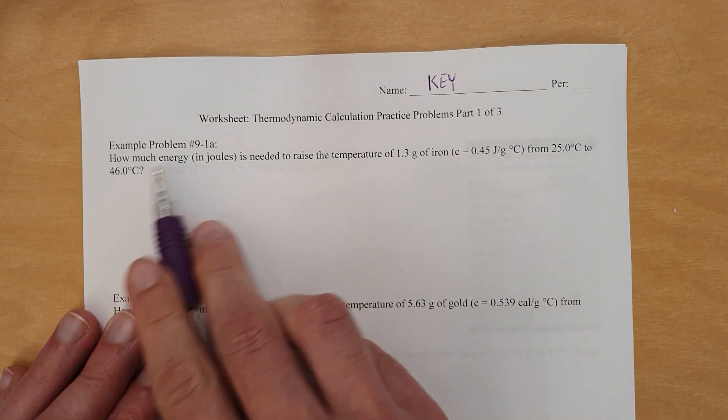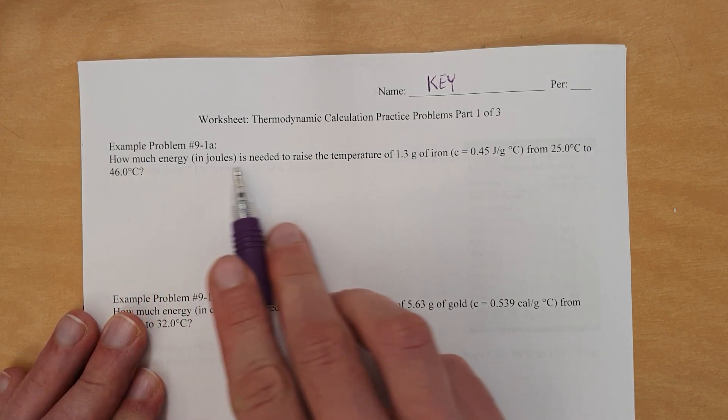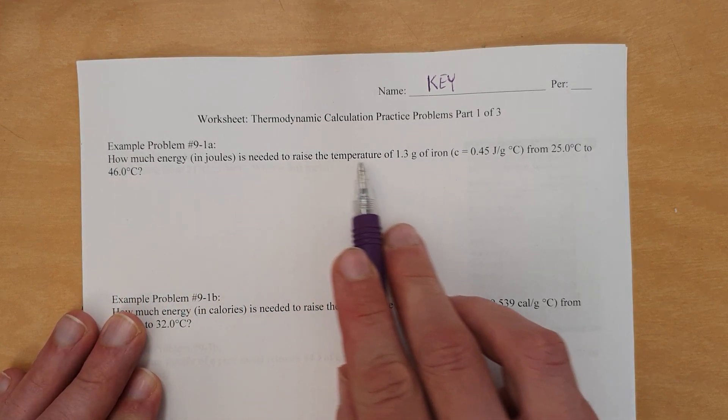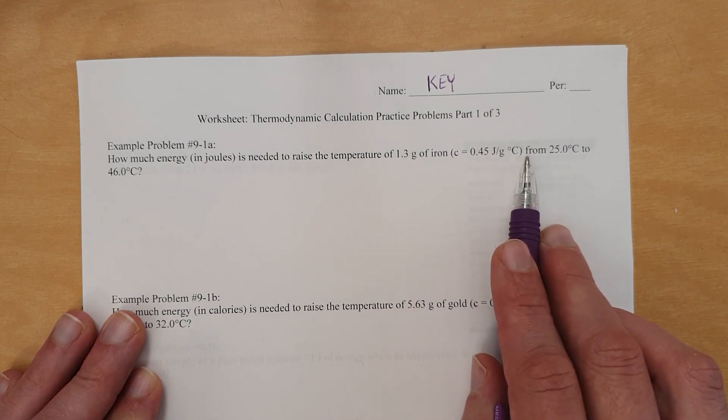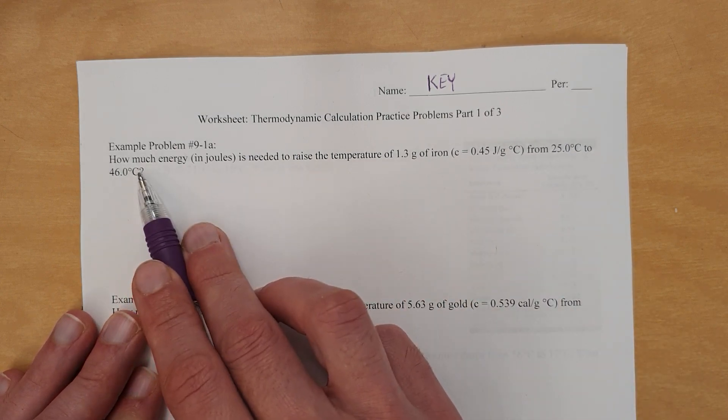So to begin with, problem 91A: How much energy in joules is needed to raise the temperature of 1.3 grams of iron with that specific heat capacity from 25.0 to 46.0 degrees Celsius?